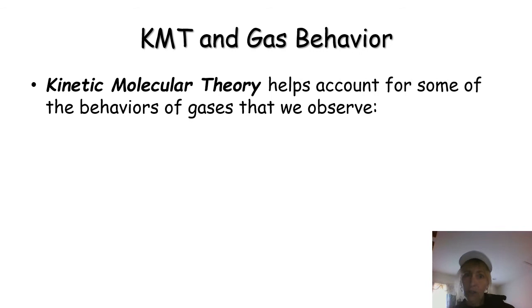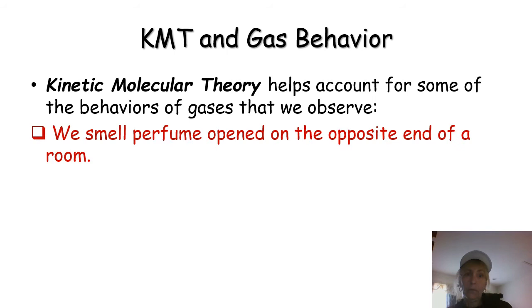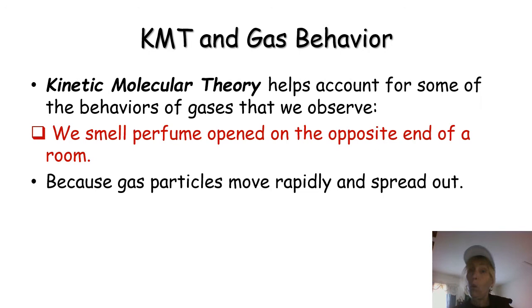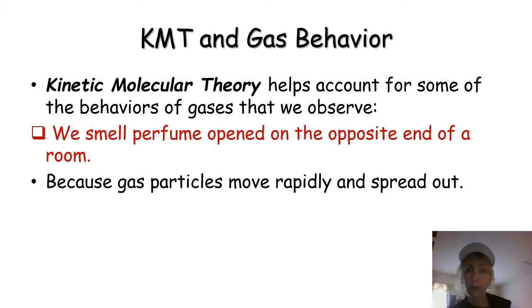Let's use the KMT assumptions to explain the behavior of gases. For instance, if someone opens a bottle of perfume at one end of the room, we smell that perfume at the opposite end of the room. Why? Because the gas particles — as KMT tells us — move quickly in random directions and spread out, filling the space they're in. They come out of the jar moving rapidly, spreading out with large distances between them because there are no attractive forces, and eventually they reach us at the other end of the room.